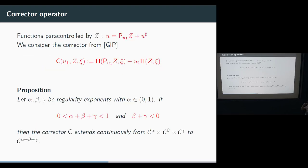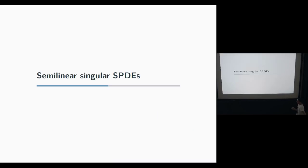We also need continuity estimates on the corrector, which was done in this work. We have two conditions on the exponents of the arguments. One condition tells us that the product is actually ill-defined and we need to use a corrector. This is an analogue of the condition for the resonance product: if the sum of all regularity exponents is large enough, we can extend using this operator. These are all the tools for higher-order paracontrol calculus that we use to solve semi-linear singular SPDEs.